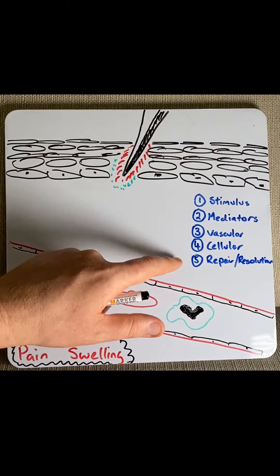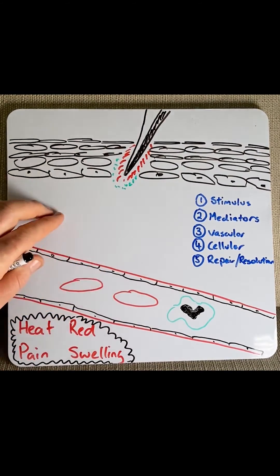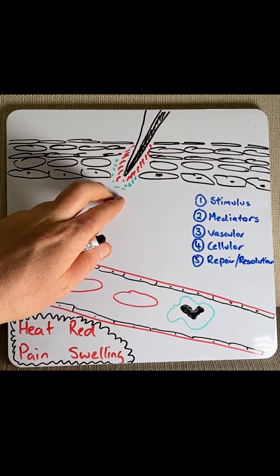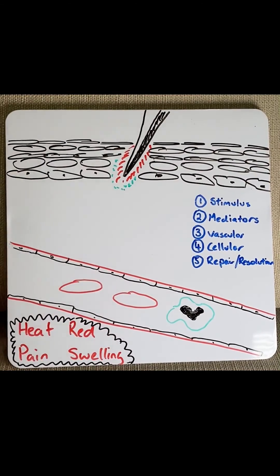Moving to the last phase being repair or resolution, we have more blood vessels go into the area, bringing in certain repair cells like fibroblasts which then close off the site, and ultimately we get repair or resolution.